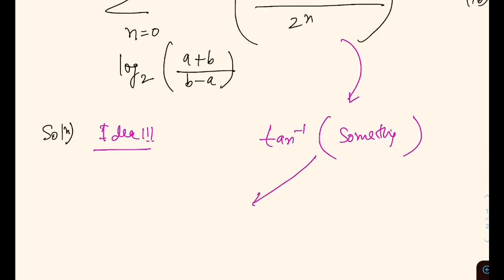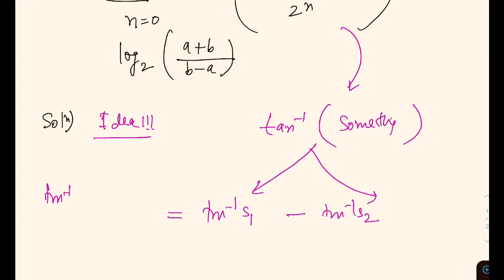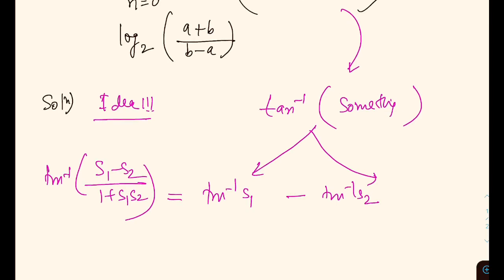We will try to break this into two parts, so that will be tan inverse of something 1 minus tan inverse of something 2, which motivates us to bring tan inverse (S1 minus S2) by (1 plus S1 S2). The idea in this kind of problem is: whenever we are given cot inverse or sin inverse or cos inverse, you bring it to tan inverse fashion.